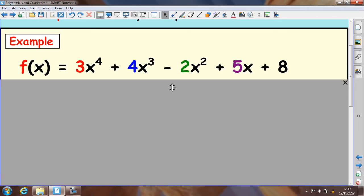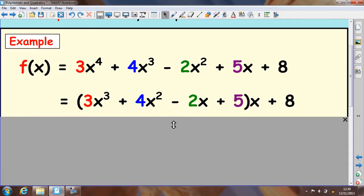So, let's look at this function here: 3x⁴ + 4x³ - 2x² + 5x + 8. What we can do is factorize this first part here. Normally in factorizing you have to factorize the whole thing, but we don't have to do that here.